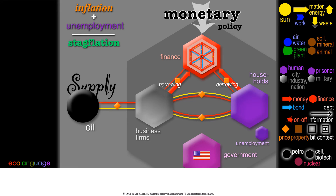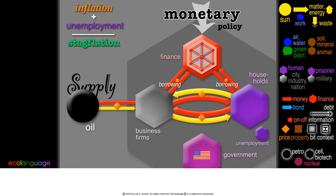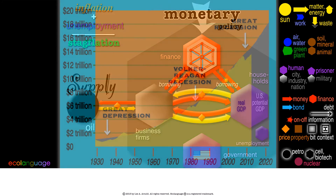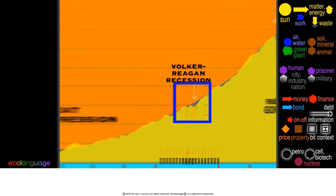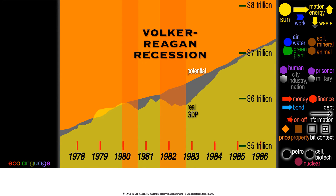Then the Fed reversed course, and the economy grew with much less inflation. This was the Volcker-Reagan recession in the early 1980s. Actually, there were two, defined when real GDP goes downhill for at least six months.